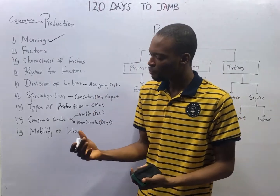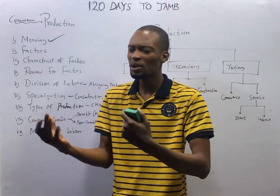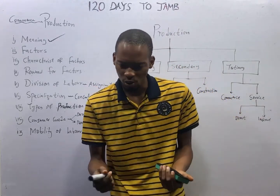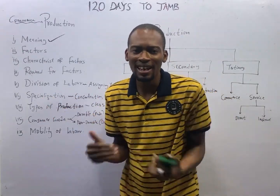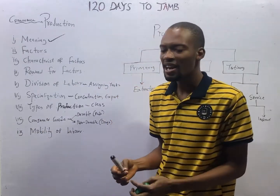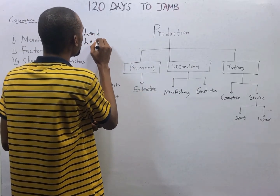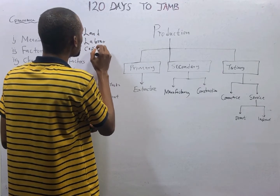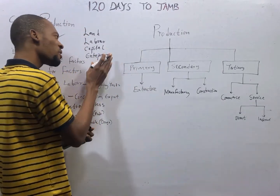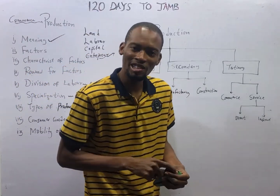We learn that production is the transformation of raw materials into a finished product or a more usable product. There are resources you need to bring together for production to be possible. All the factors you need to carry out production are referred to as the factors of production, and they are land, labor, capital, and entrepreneurship or enterprise.